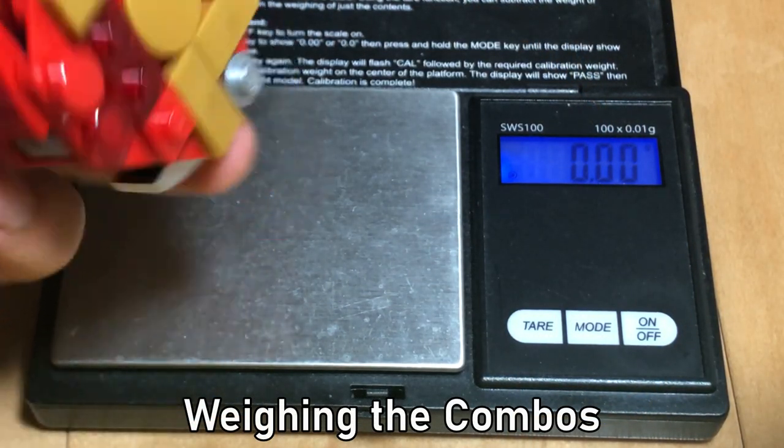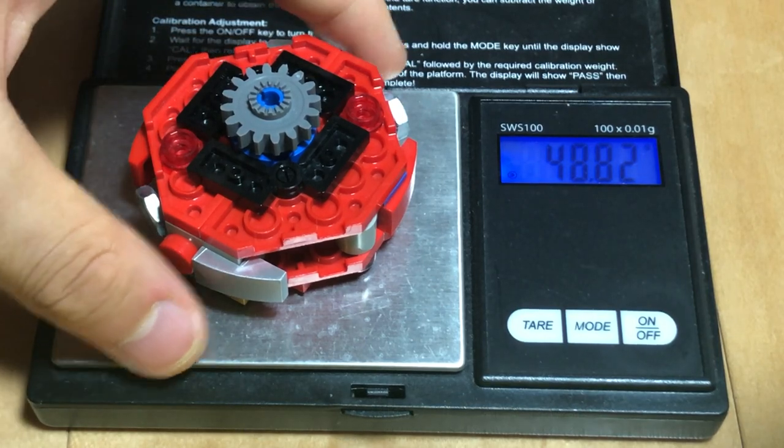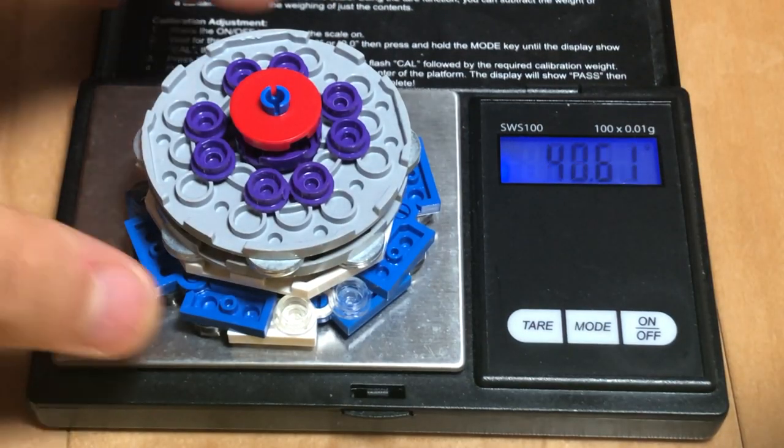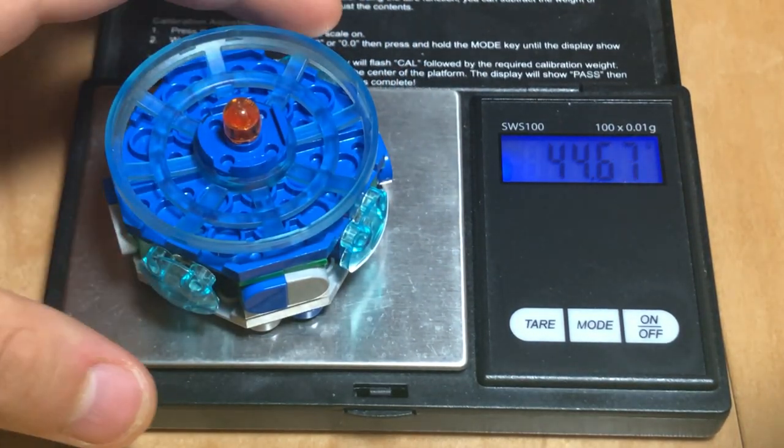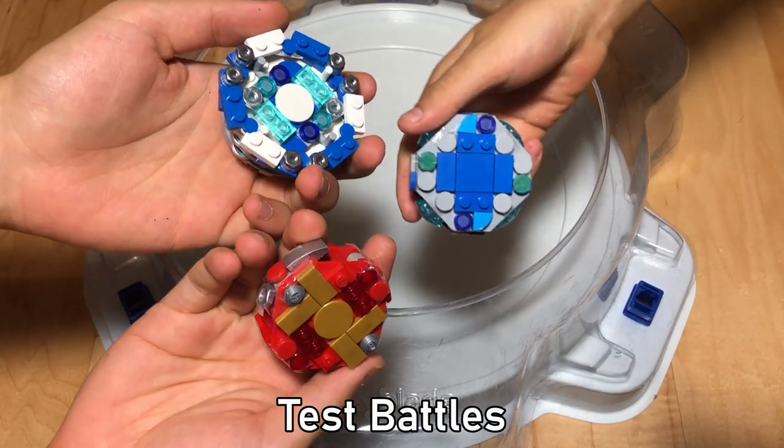Now let's weigh the combos. So Blood Longinus weighs 48.82 grams, not bad. Ice Phoenix weighs 42.237 grams. And LEGO Aegis Dash weighs 44.67 grams. Time for some test battles.